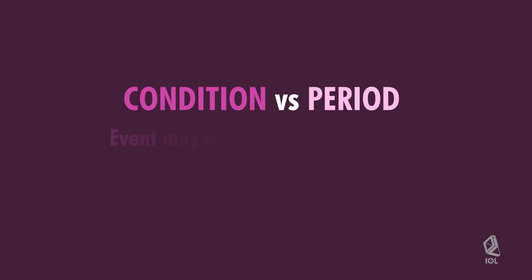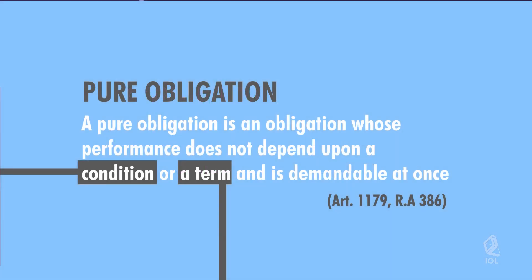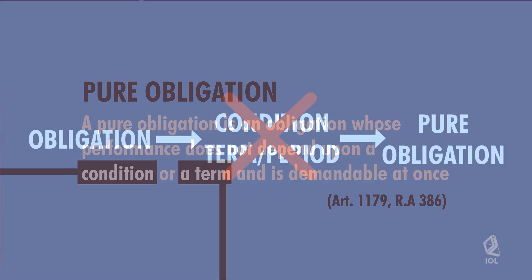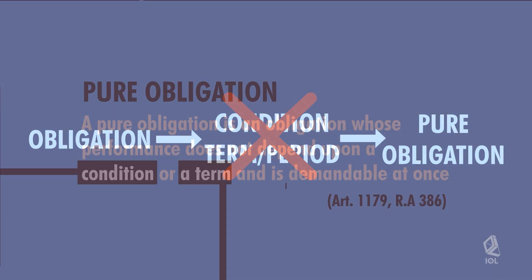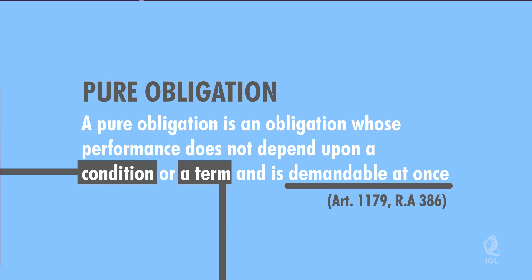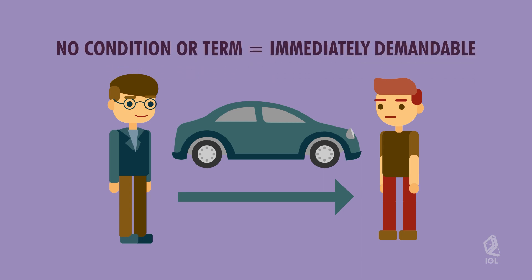Note that a condition is an event that may or may not happen, while a period is an event that must happen. Going back to pure obligation — if an obligation is not subject to any condition or term, then it is a pure obligation, thus immediately demandable. For example, Anton obliges himself to give Henry a car. The obligation is immediately demandable since there is no condition or term.